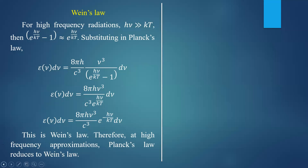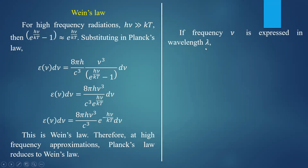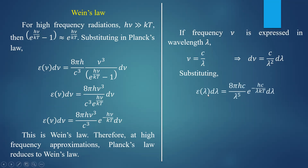At high frequency approximation, Planck's law reduces to Wien's law of radiation. Let us express this in terms of wavelength. Substituting ν = c/λ and dν = c/λ² dλ, you get the energy density as a function of wavelength: ε_λ dλ = (8πhc/λ⁵) × e^(−hc/λkT) dλ.